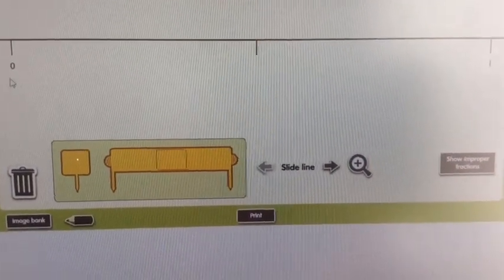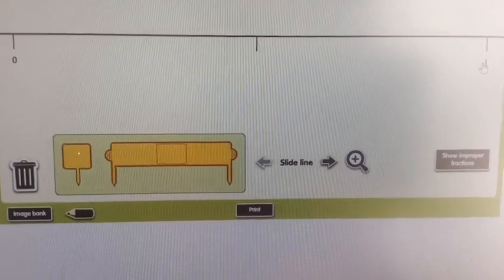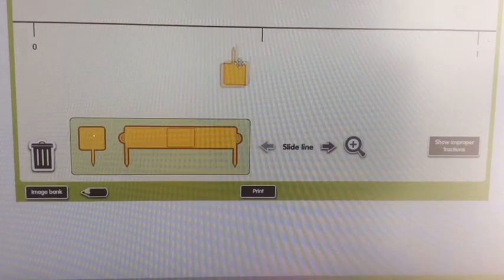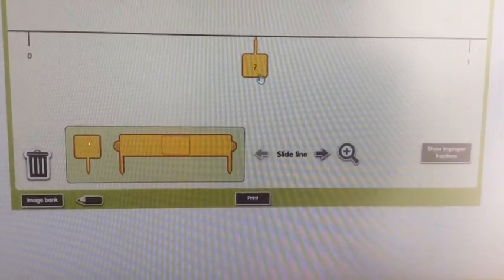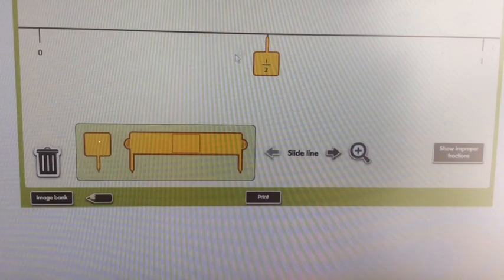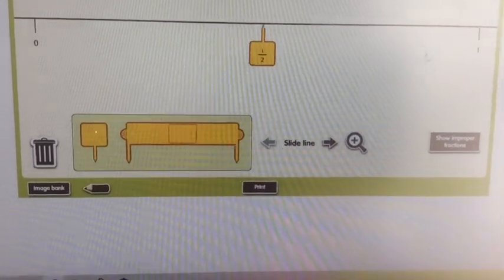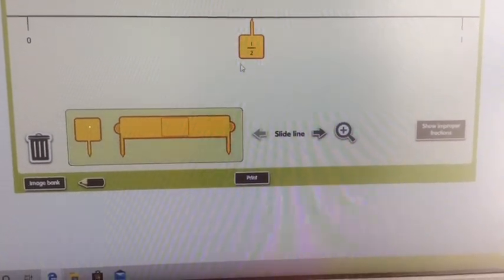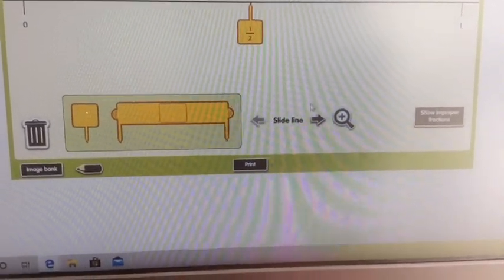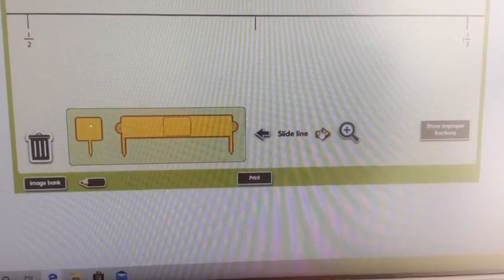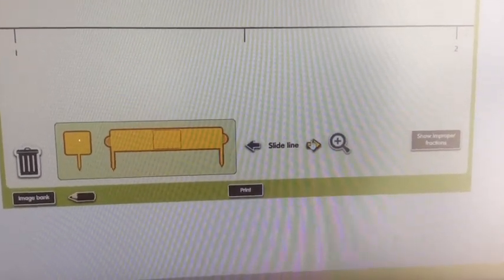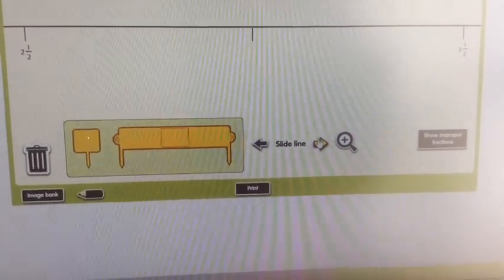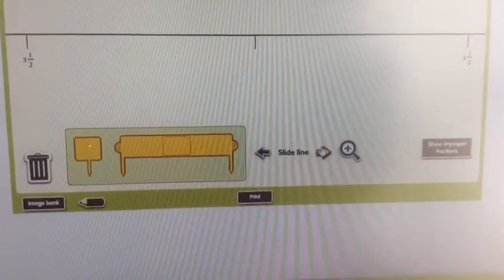Let's take a look at a number line now. If this is zero and that's one, what's right in the middle? What fraction would that be labelled as? Hopefully you can see it's halfway between zero and one. So let's count along now in halves. It's zero, a half, one, one and a half, two, two and a half, three, three and a half, four, four and a half, five and so on.